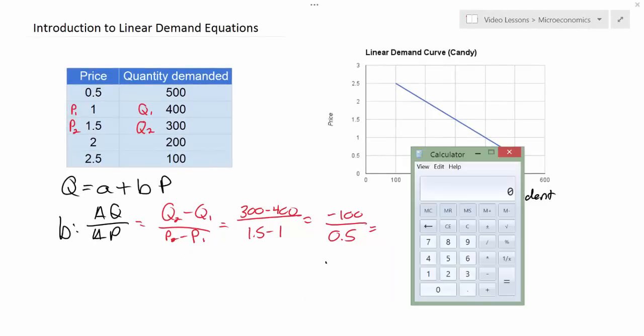Let's do that calculation now. We can do 100, we'll make that negative, divided by 0.5. Divided by 0.5 gives us a b variable of negative 200.